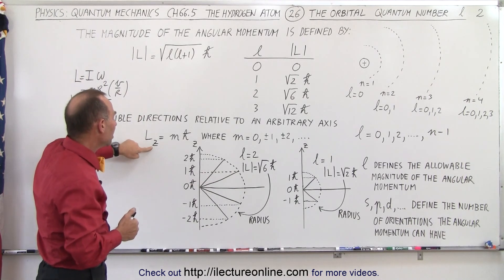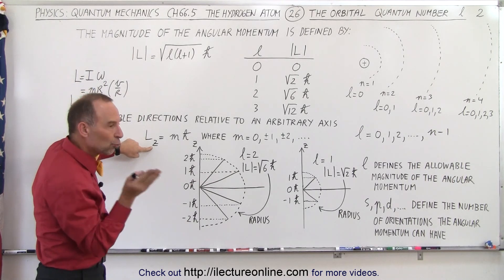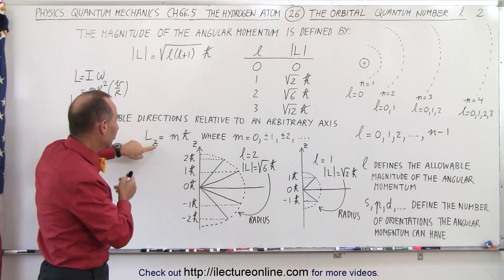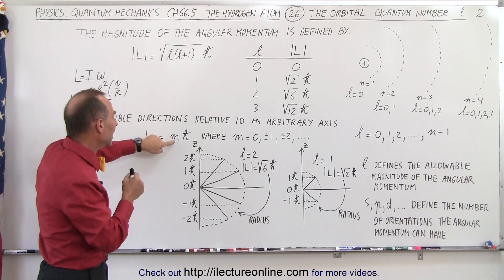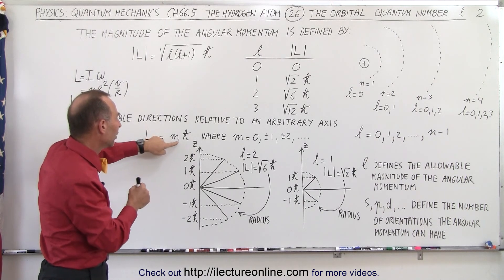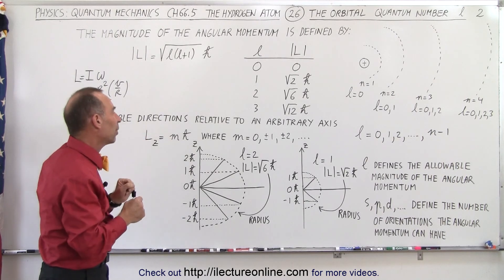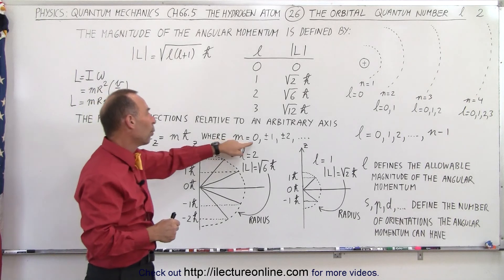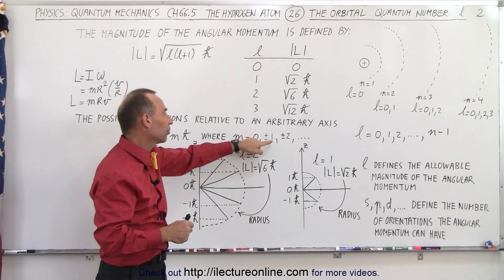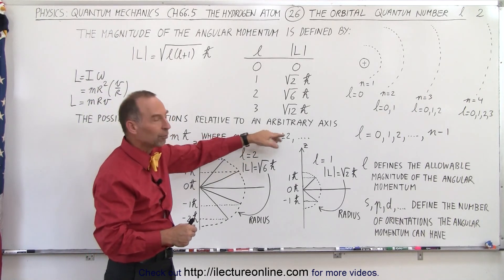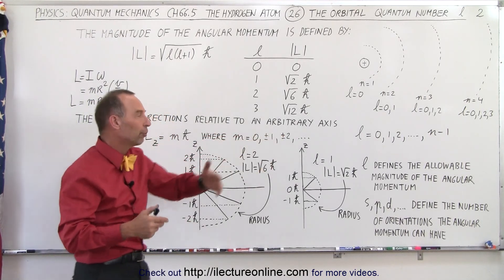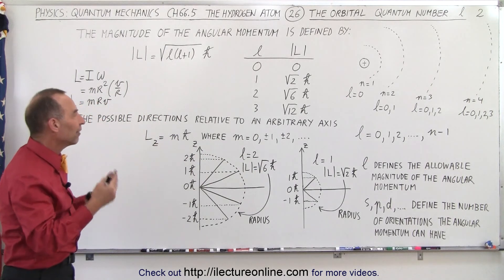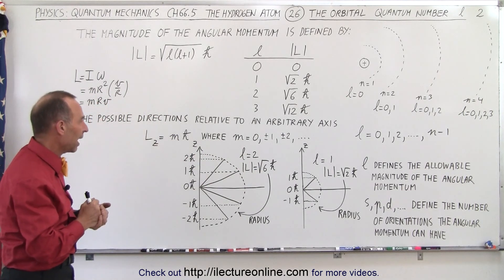Then L sub z, the direction relative to the z-axis, is defined as an integer number M times H-bar, where M can be 0, plus or minus 1, plus or minus 2, and so forth, all the way up to the value of L.